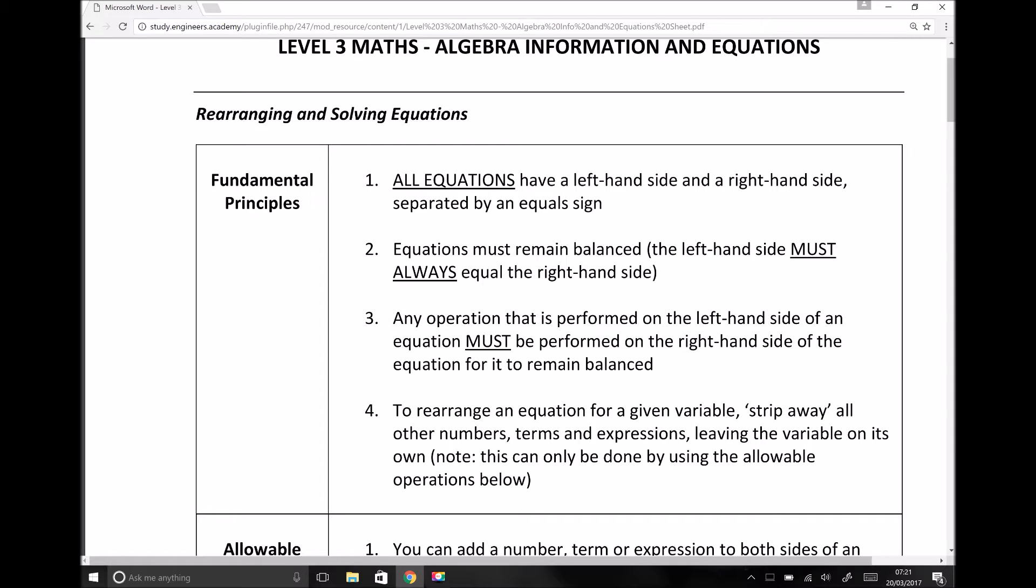So there are four fundamental principles. The first fundamental principle is that all equations have a left-hand side and a right-hand side, separated by an equal sign. So for it to be an equation, it must include an equal sign, and therefore by having an equal sign, it has a left and a right-hand side.